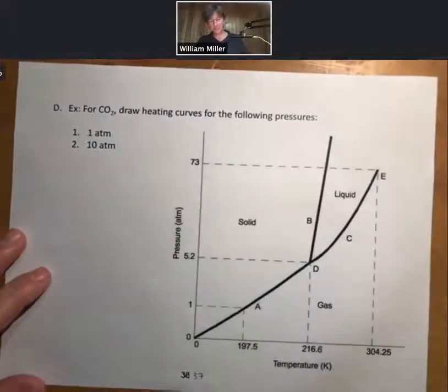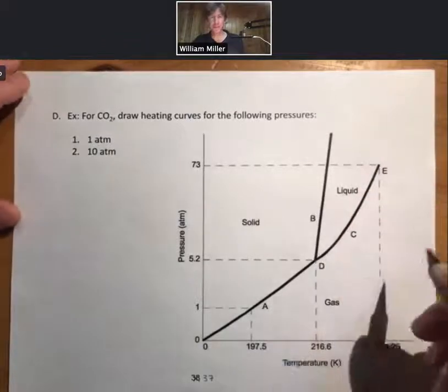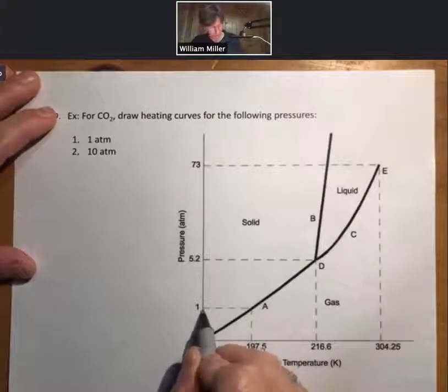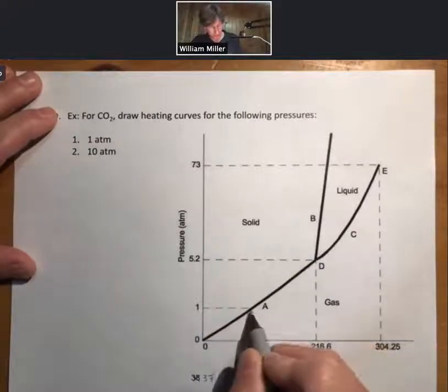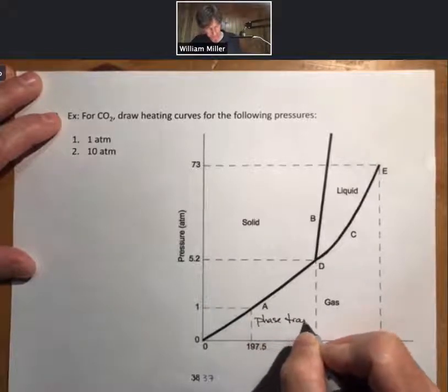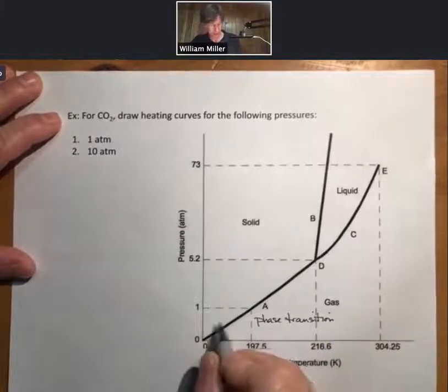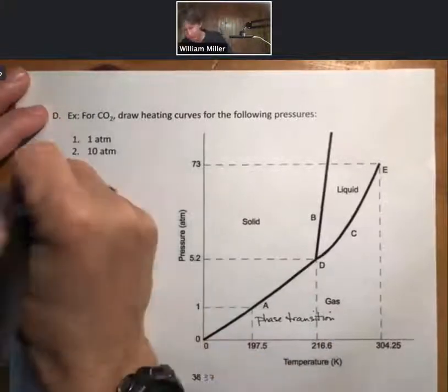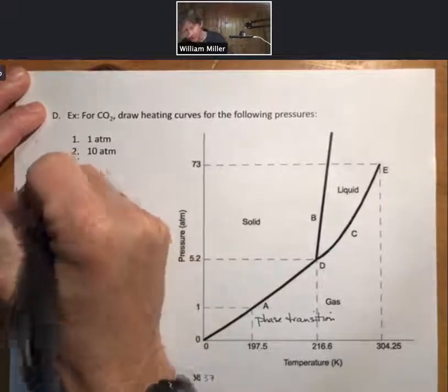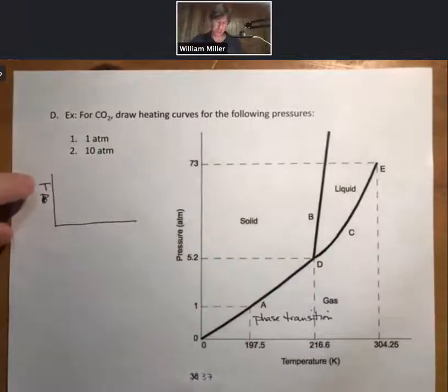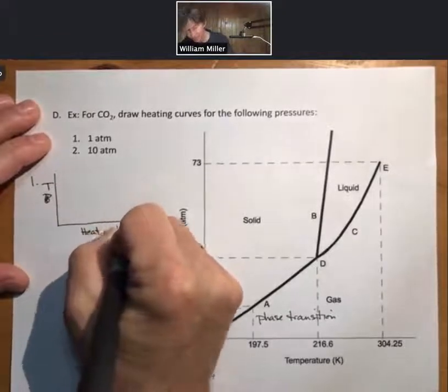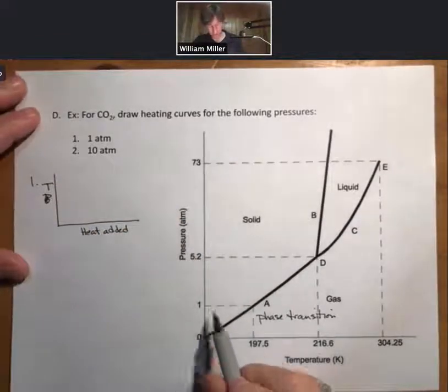Another question we can ask you for—and we'll do CO2 here—draw heating curves for the following pressures. What you do is you basically start at zero kelvin, you work your way up. Any lines you cross are phase transitions. We've already done this at one atmosphere. Let's do it for one atmosphere again. So for heating curves, temperature is on the y-axis, heat added is on the x-axis.